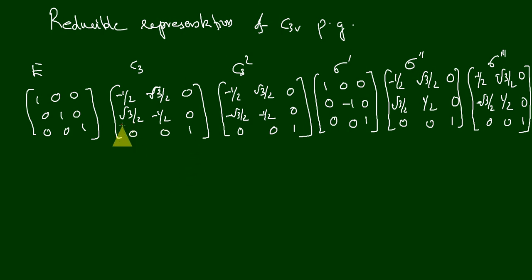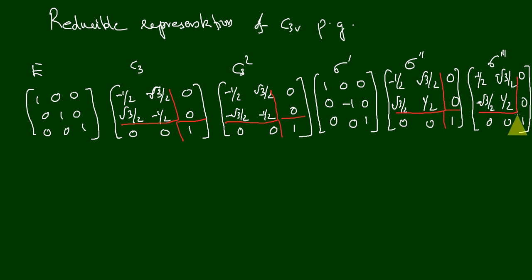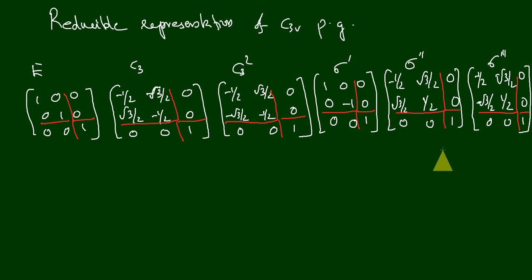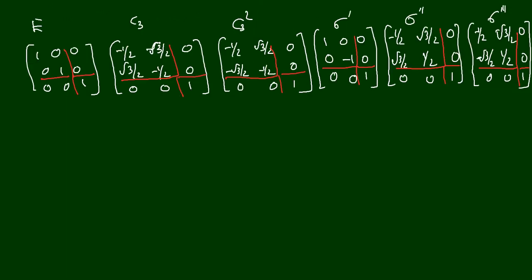The only valid block factorization gives a 2×2 block and a 1×1 block for each matrix. For the C3 and C3² matrices, this is also the only possible factorization. Since we apply this factorization to C3 and C3², we must apply it consistently to all other matrices — sigma dash, sigma double dash, and sigma triple dash — in exactly the same way.